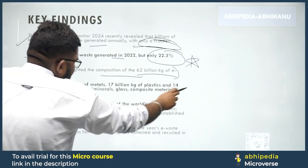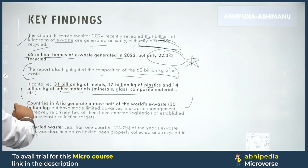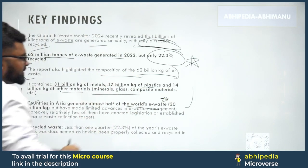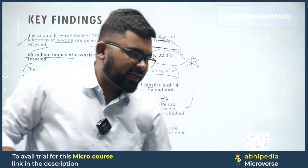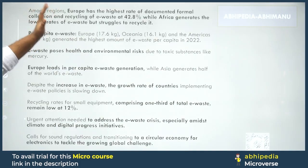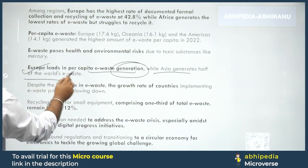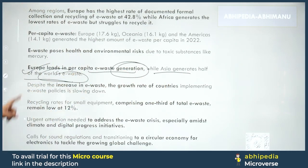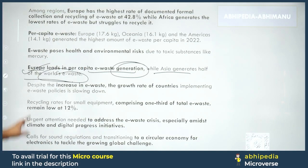Countries in Asia generate almost half of the world's e-waste. We generate more e-waste because there is insufficient recycling, hence the e-waste pile keeps growing. Less than one quarter of the year's e-waste mass was documented as having been properly collected and recycled. Europe leads in per capita e-waste generation, while Asia generates half of the world's total e-waste collectively — this is the population factor. Despite the increase in e-waste, the growth rate of countries implementing e-waste policies is slowing down.